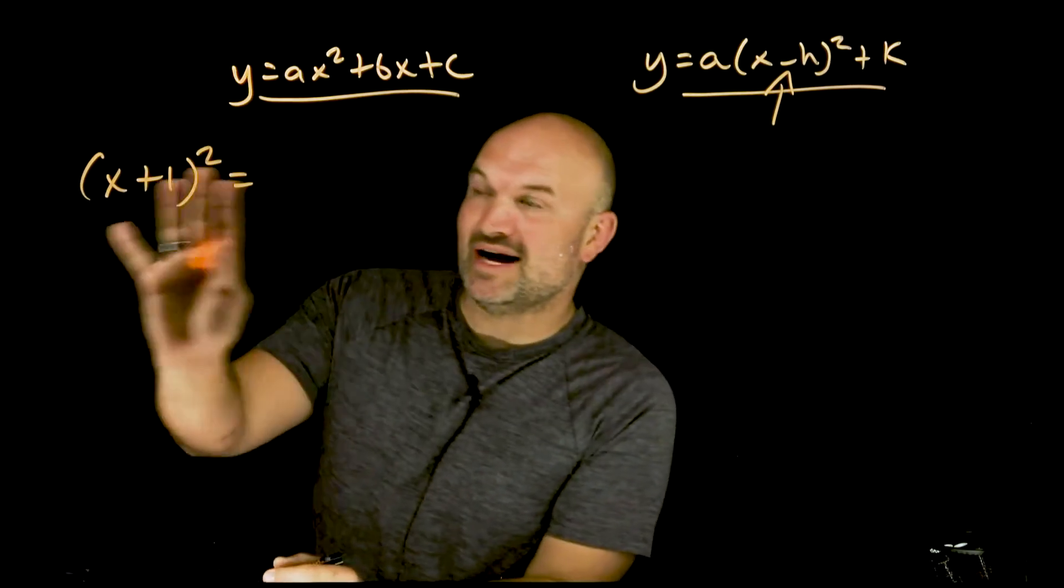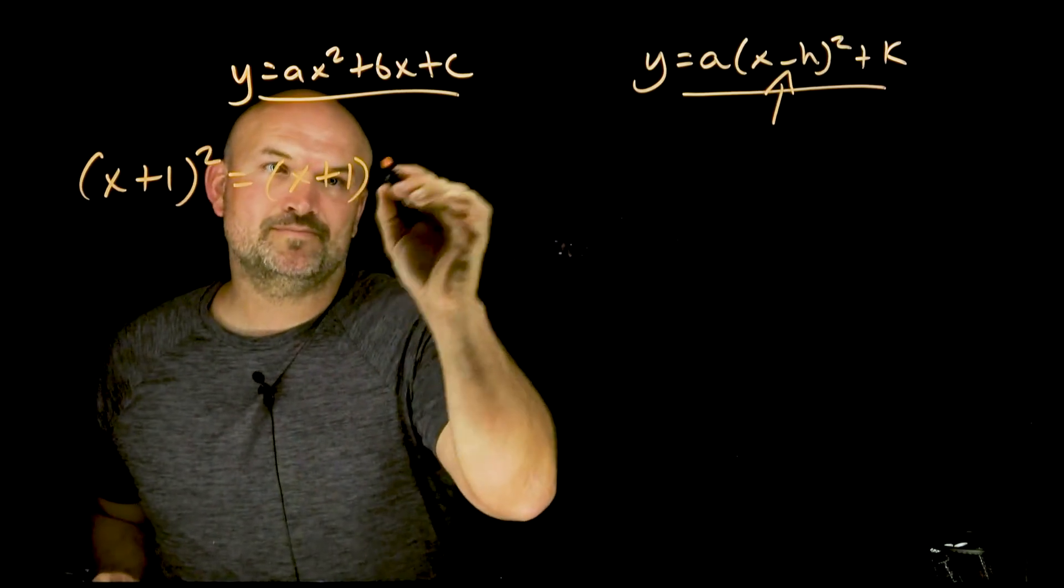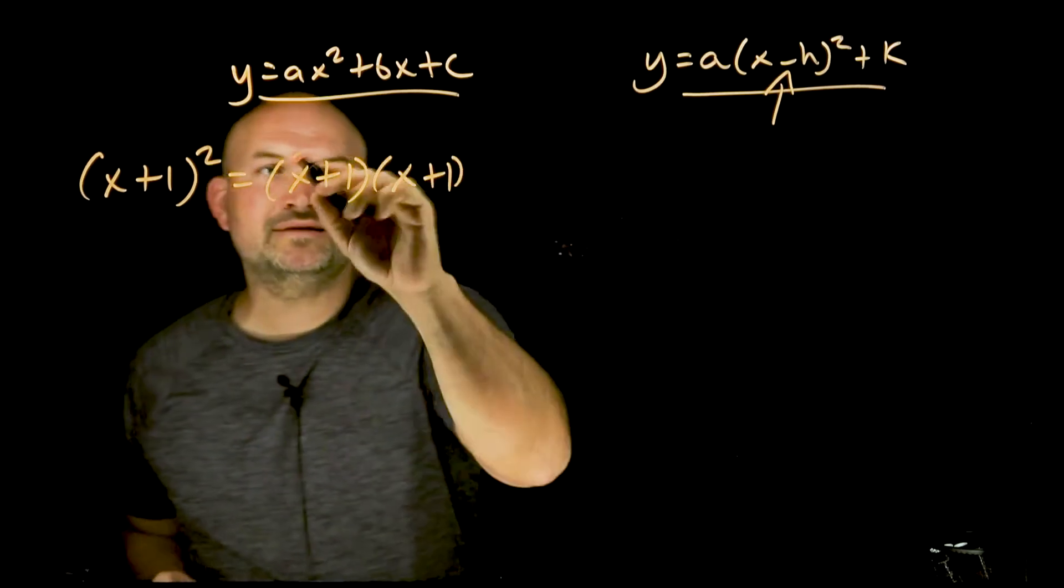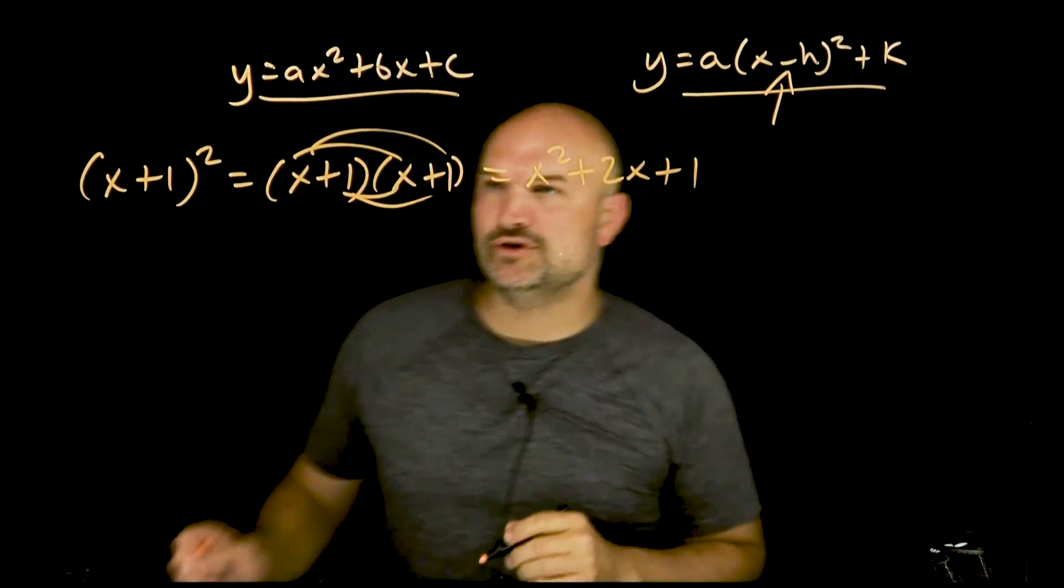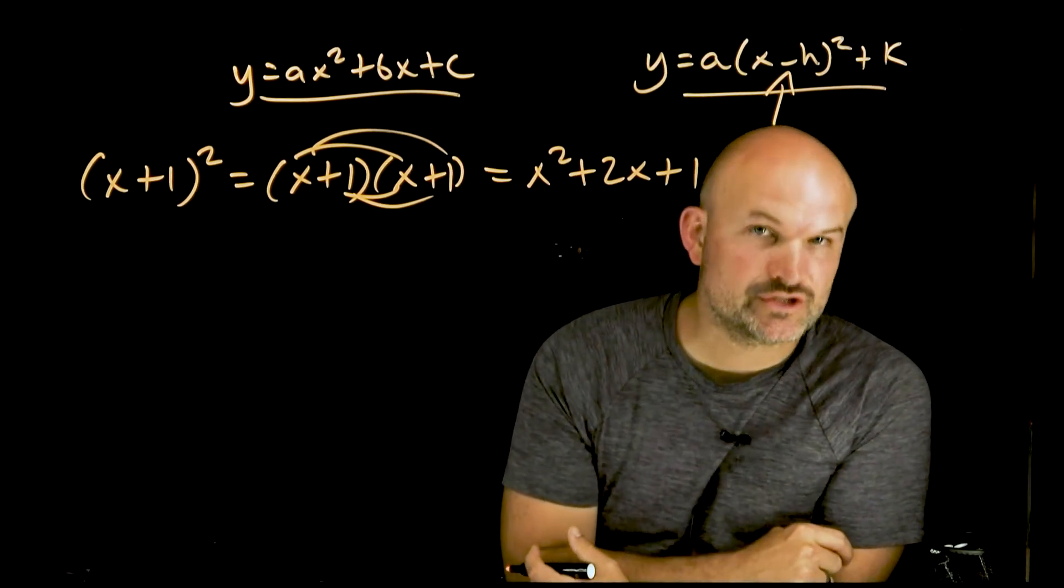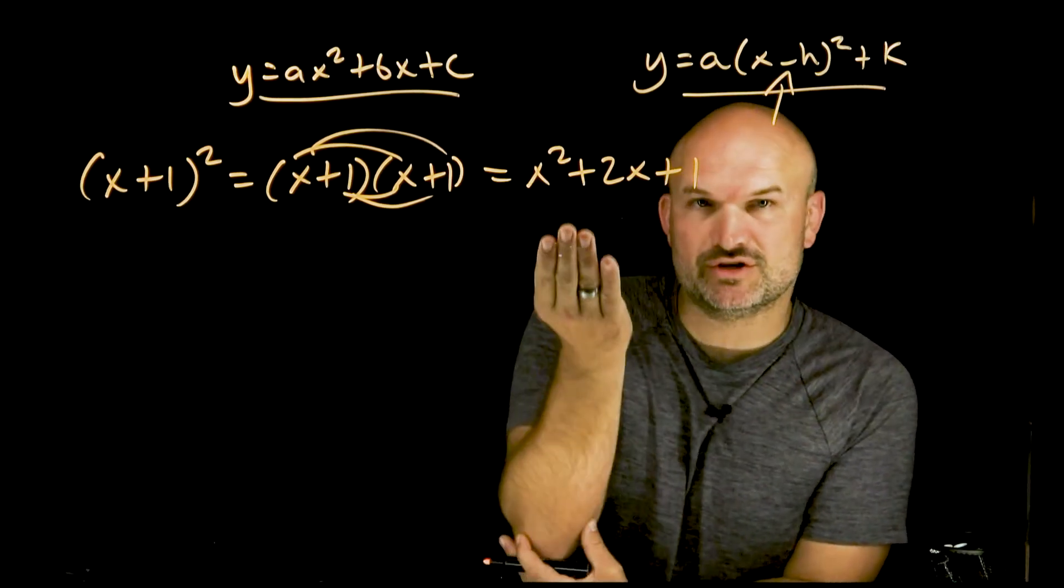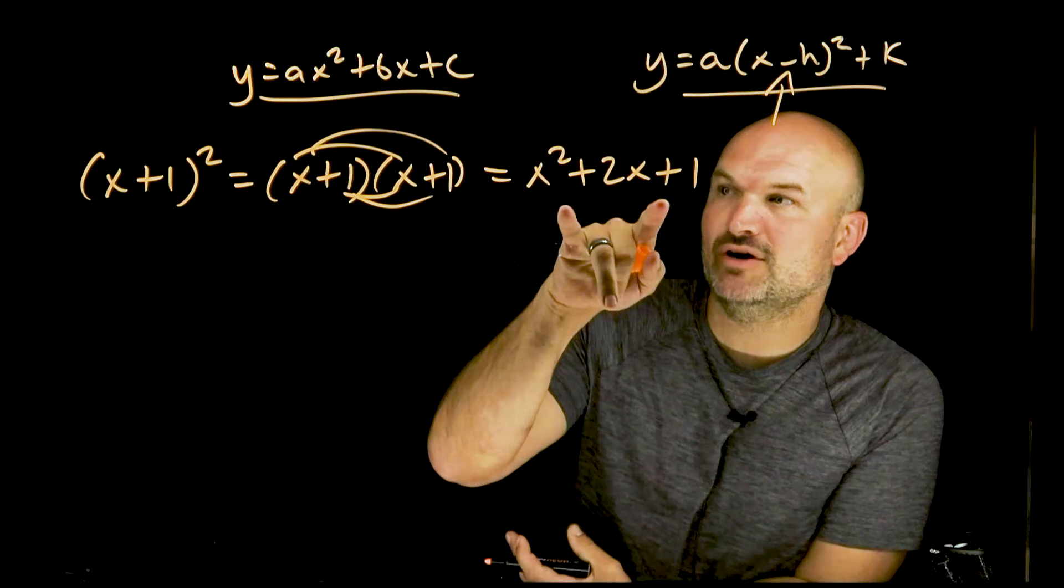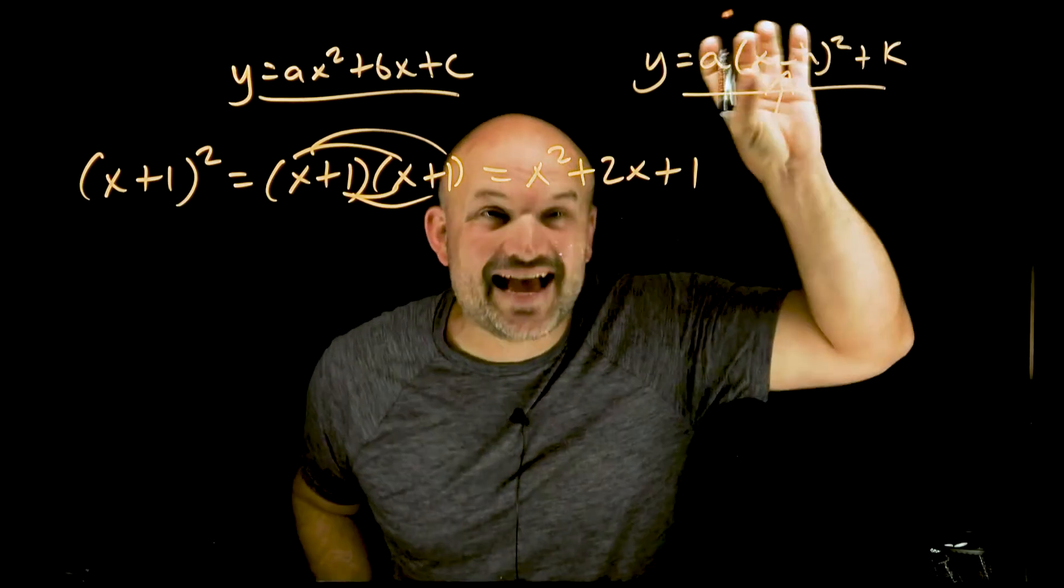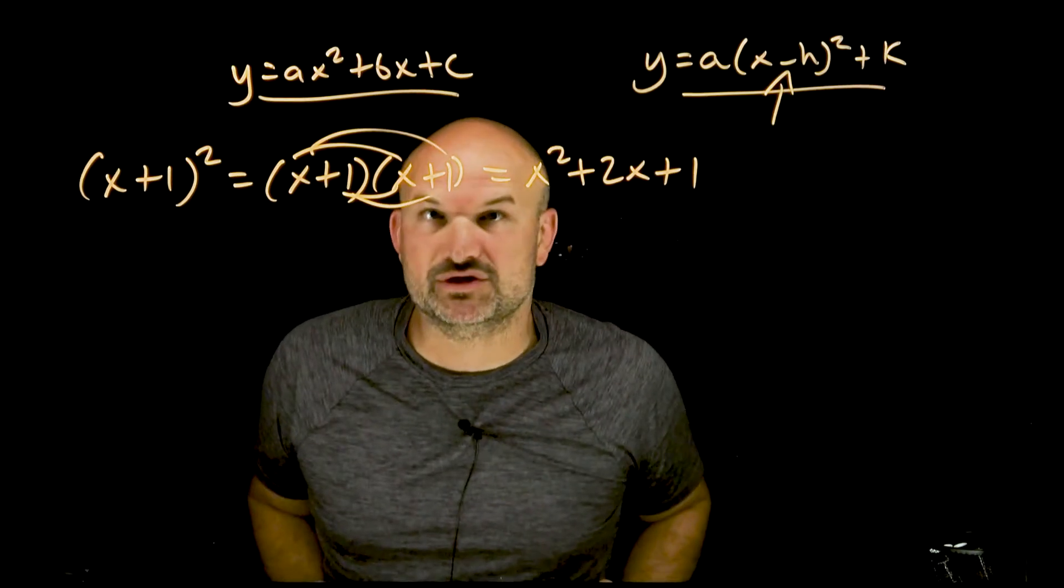It's important to make sure we understand what is a binomial squared. Just remember a binomial squared is going to be a binomial multiplied by itself. So this is (x+1) times (x+1). Then applying foil or distributive property, we are going to achieve x²+2x+1. This is what we call a perfect square trinomial. When we are completing the square, we always want to create perfect square trinomials because they can be factored down into binomial squares.